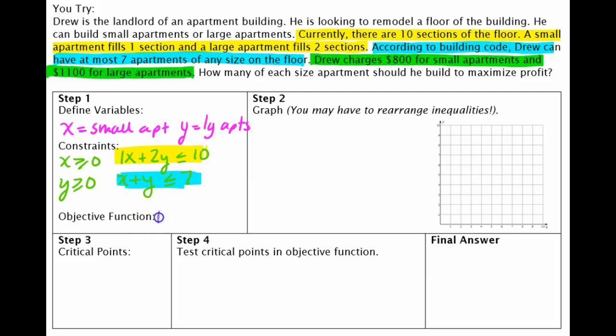since it's profit, I like to say P of xy, since I'm using two variables. And he's going to charge $800 for every small apartment plus $1,100 for every large apartment. So that purple equation there represents my objective function.